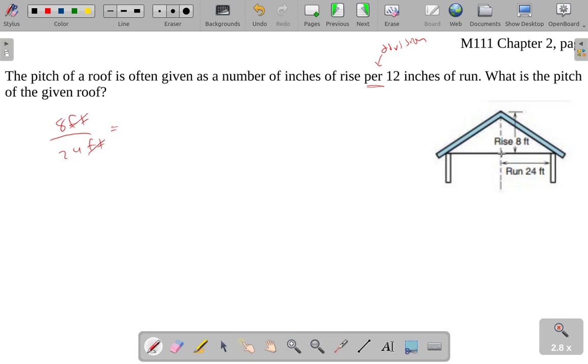I'm going to think of this fraction as 8 over 24. And I would like it to be something over 12, because generally when you're talking about a pitch, it's going to be per 12. And actually, it's usually per 12 inches. Let me give this a little more room. So if I have 8 and 24, if I'm starting out with 24 and I want to get to 12, well, the way to get there is to divide by 2.